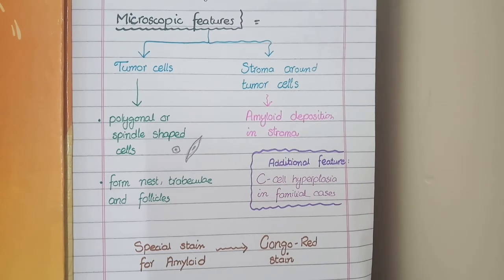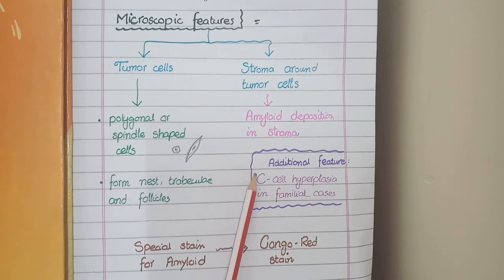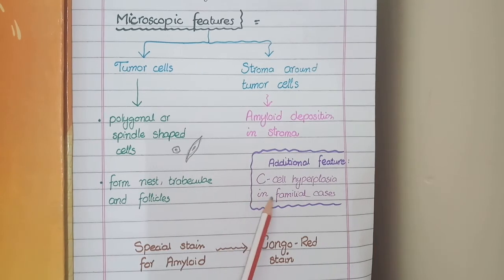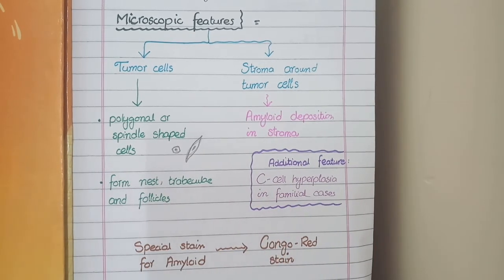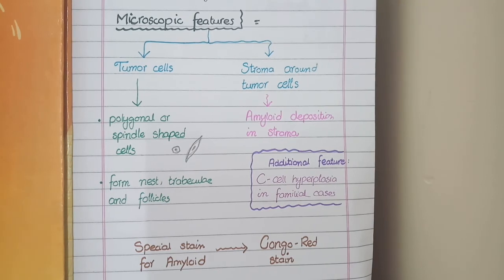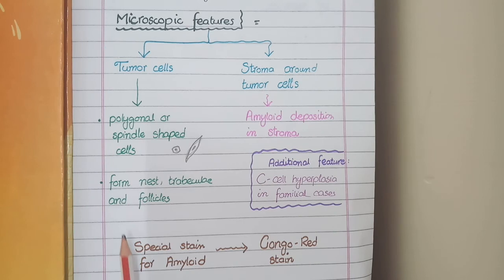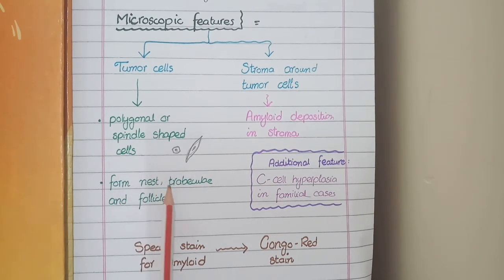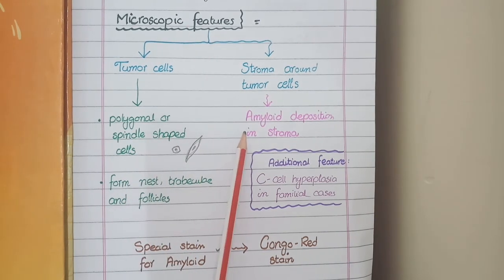In gross morphology, there may be areas of C-cell hyperplasia in cases of multifamilial syndromes, so you can also appreciate multiple masses or multiple hyperplastic lesions on microscopy. Overall, the microscopic features are polygonal or spindle shaped cells that form nests, trabeculae, and follicles, with amyloid deposition in the stroma.